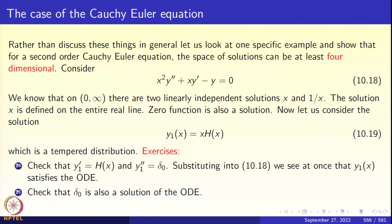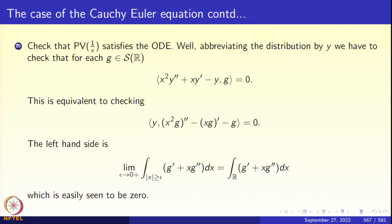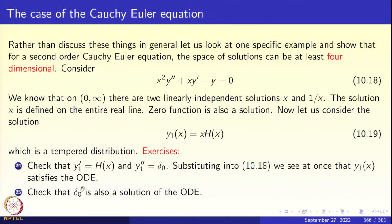Now check that δ₀ is also a solution of the ordinary differential equation. We compute the second derivative of δ₀ and recall from the previous capsules that x·δ₀' = -δ₀. For the middle term and last term you get -2δ₀, and for the first term you get +2δ₀. These cancel, confirming that δ₀ is indeed a solution of the ODE. So now we have one more solution: the Dirac delta.